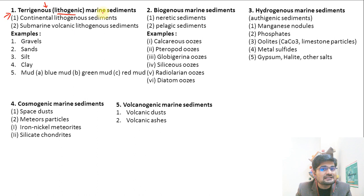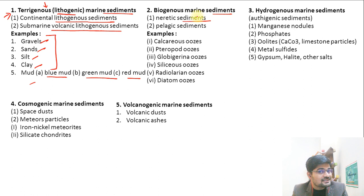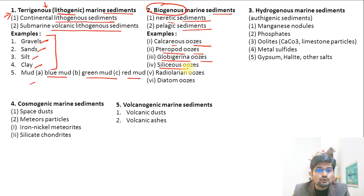Elaborating further, terrigenous — also called lithogenic marine sediments — include continental lithogenous and submarine volcanic lithogenous sediments. Examples include gravel, sand, silt, clay, and mud — which also comes in blue mud, green mud, and red mud. Biogenous marine sediments include neritic and pelagic sediments: calcareous remains such as calcareous ooze, pteropod ooze, globigerina ooze, siliceous ooze, radiolaria ooze, and diatom ooze — depending on which organism's deposition is present.